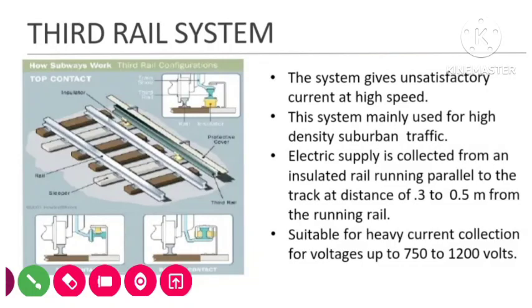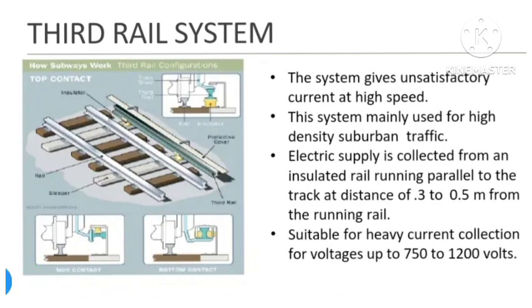Today we will see the third rail system. Looking at the diagram, there are four main points to remember. The first is that it gives unsatisfactory current at high speed. The second is that it is used for high-density suburban traffic.